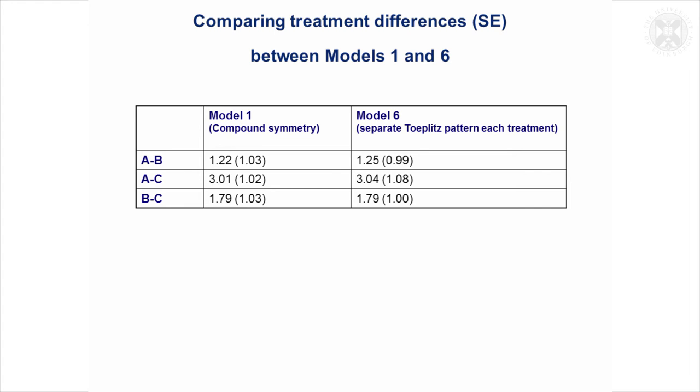We'd managed to justify quite a complicated covariance pattern in Model 6. It's maybe interesting just to see how does that affect the fixed effects estimate, our treatment effects.